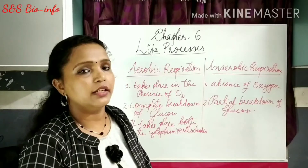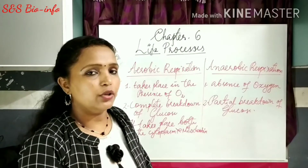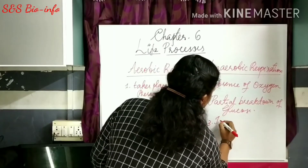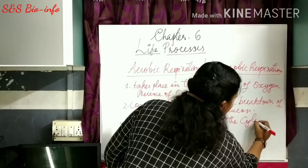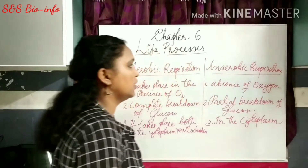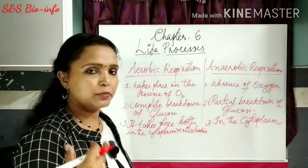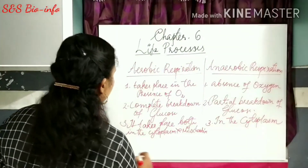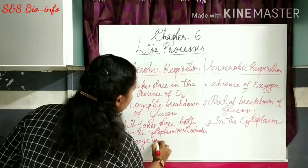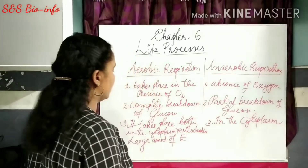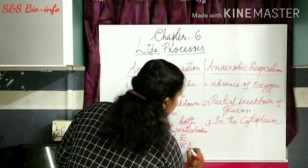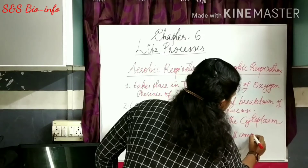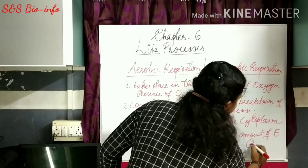Mitochondria is the powerhouse of the cell, where energy is stored in the form of ATP — adenosine triphosphate. Fourth difference: aerobic respiration releases a large amount of energy, nearly 38 ATP molecules, while anaerobic respiration releases a small amount of energy, only about 2 ATP molecules.